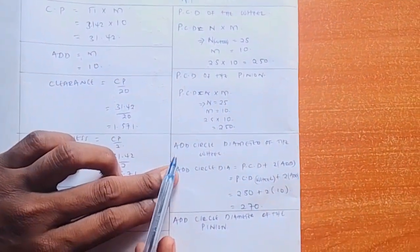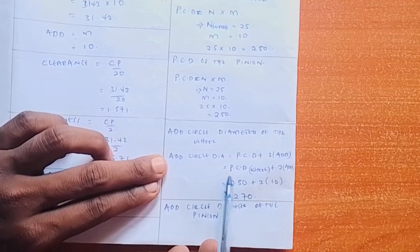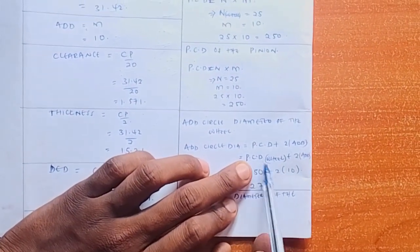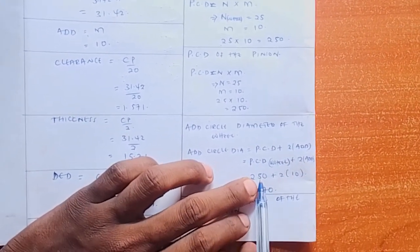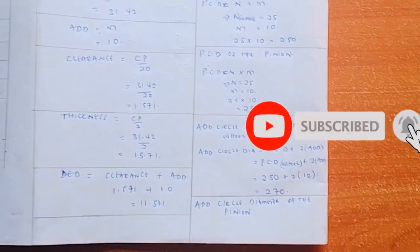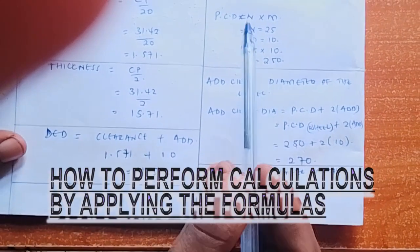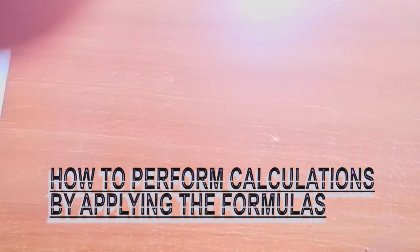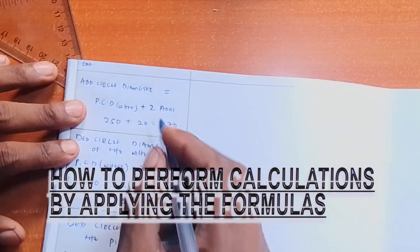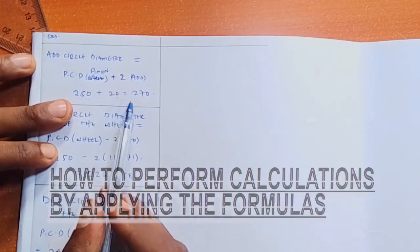Next, we look for the addendum circle diameter of the wheel: addendum circle diameter equals PCD plus 2 times addendum. The PCD of the wheel is 250 plus 2 times 10, which gives 270 mm. Then the addendum circle diameter of the pinion: PCD of the pinion (250) plus 2 times addendum (20) equals 270 mm.